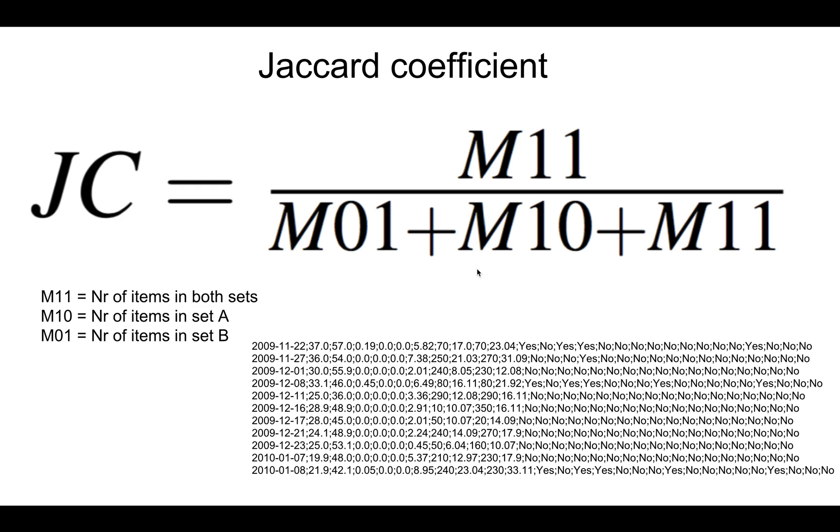So in the previous similarity measurements we have been using similarities that are based on some kind of real value number, like the temperature in Fahrenheit for example, or dates that have real values. The Jaccard coefficient is instead based on if something exists in a set or not. So it's going to be really efficient for checking the similarity in these cases where we have a yes and no answer that are binary basically.